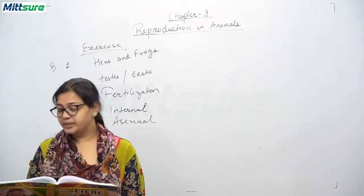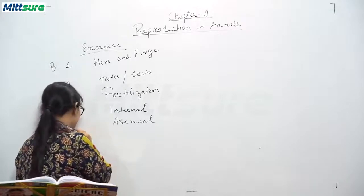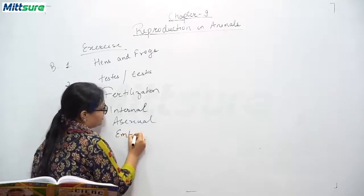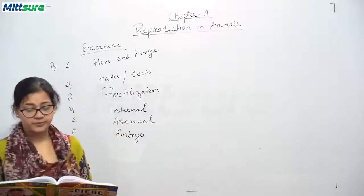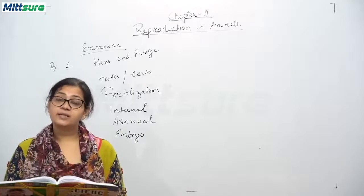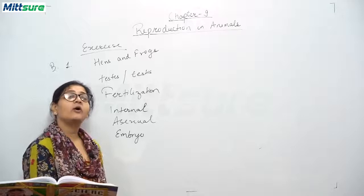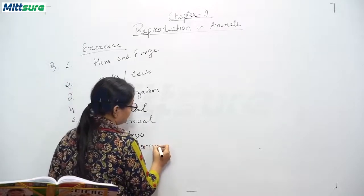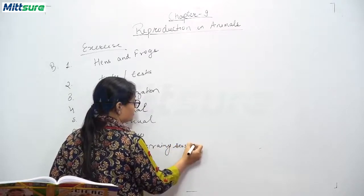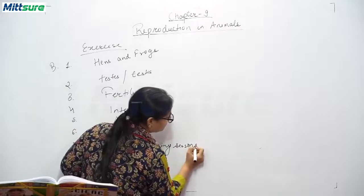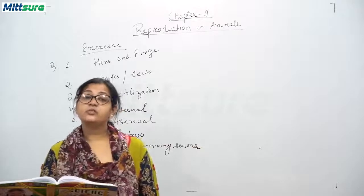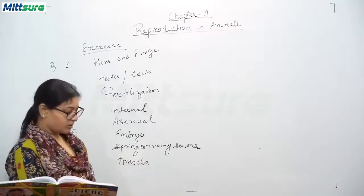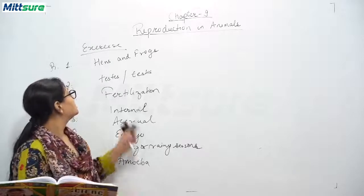Sixth: the zygote after repeated division gives rise to embryo — the developing stage. Seventh: external fertilization in frog takes place in spring or rainy season. Eighth: binary fission occurs in amoeba, or you can also write paramecium. This completes the answers for Section B — fill in the blanks with appropriate words.